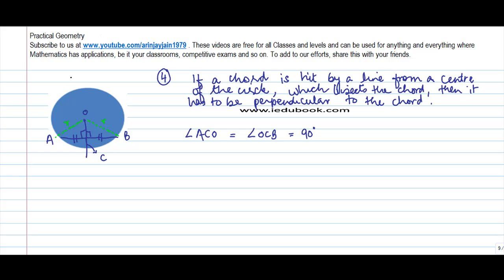Now, please note that in triangle OAC and triangle OCB, in these two triangles, there is one thing that you need to note. What is that? The thing is that if these two triangles are congruent,